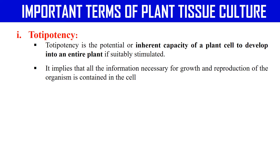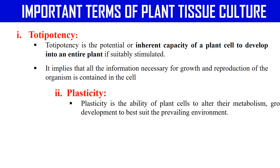The first term is Totipotency. Totipotency is the ability of a plant cell to develop into a complete plant — meaning a single cell has the power to develop into a complete plant if it gets the proper conditions. That power is known as Totipotency, and this term was given by J. Haberlandt.